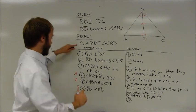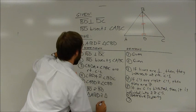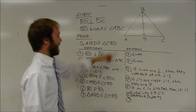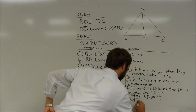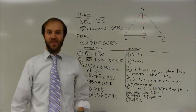And so, I can state now the triangle ABD is congruent to triangle CBD. And the reason being the angle-side-angle rule. Angle-side-angle. And that is the end of my proof.